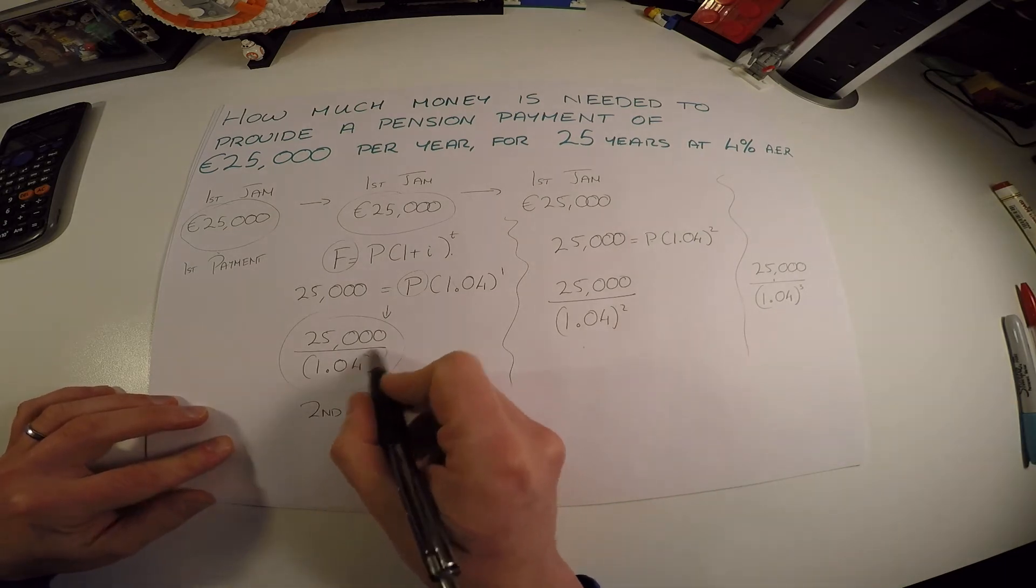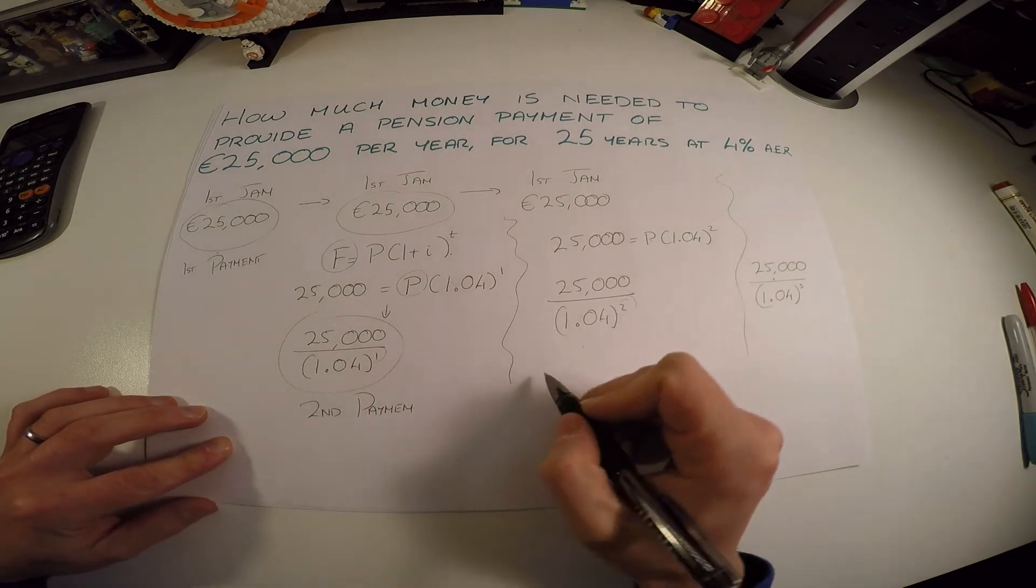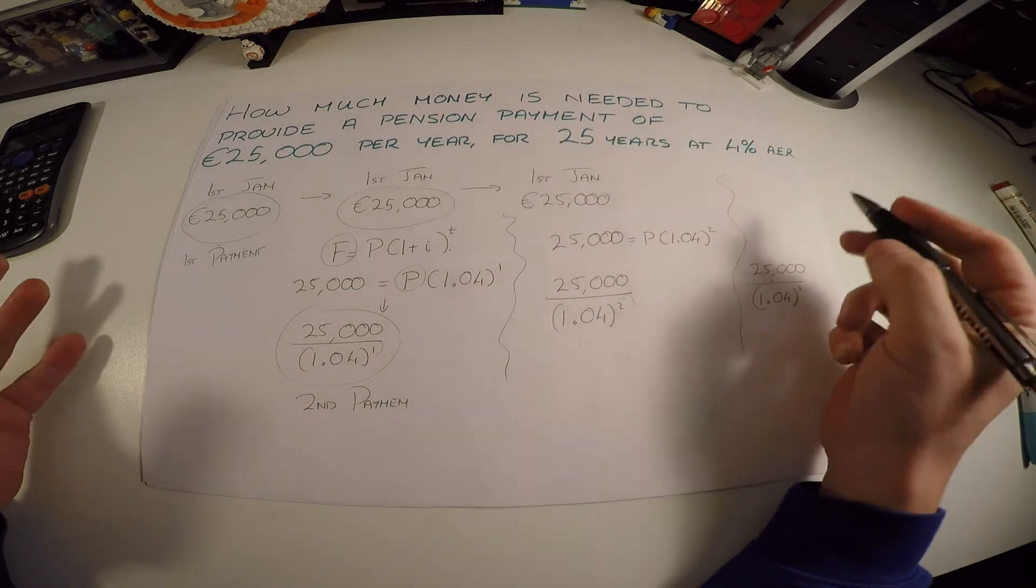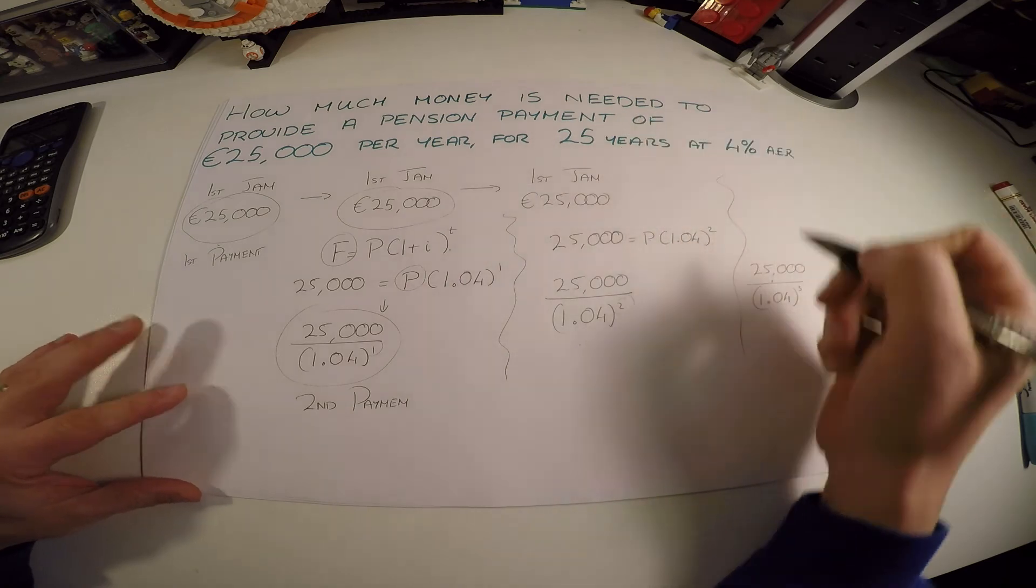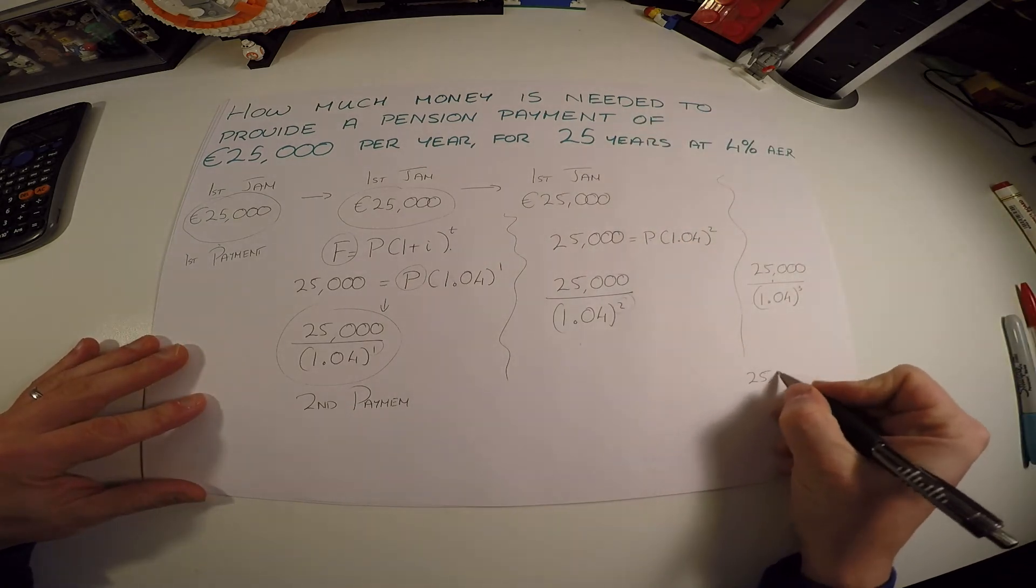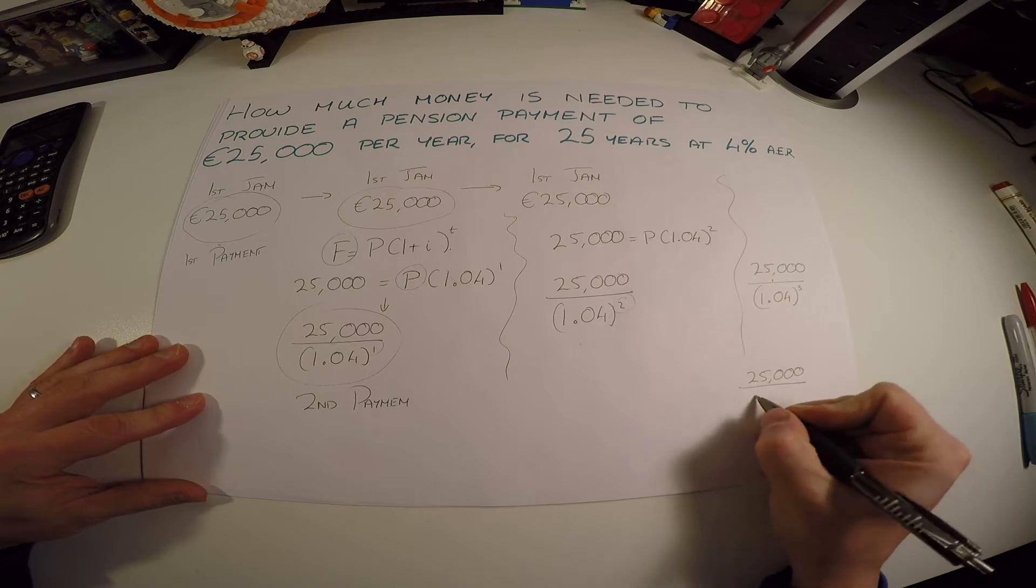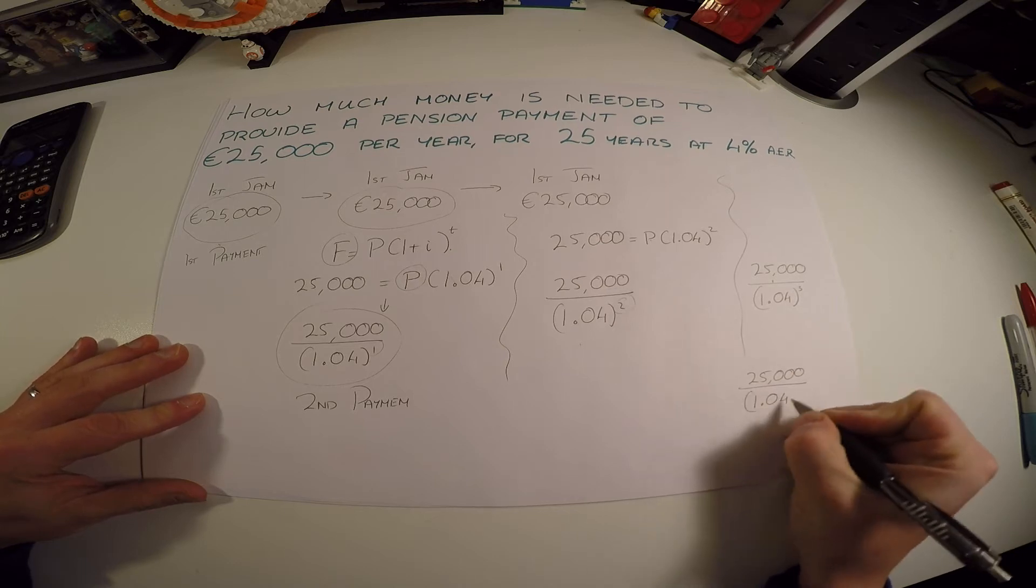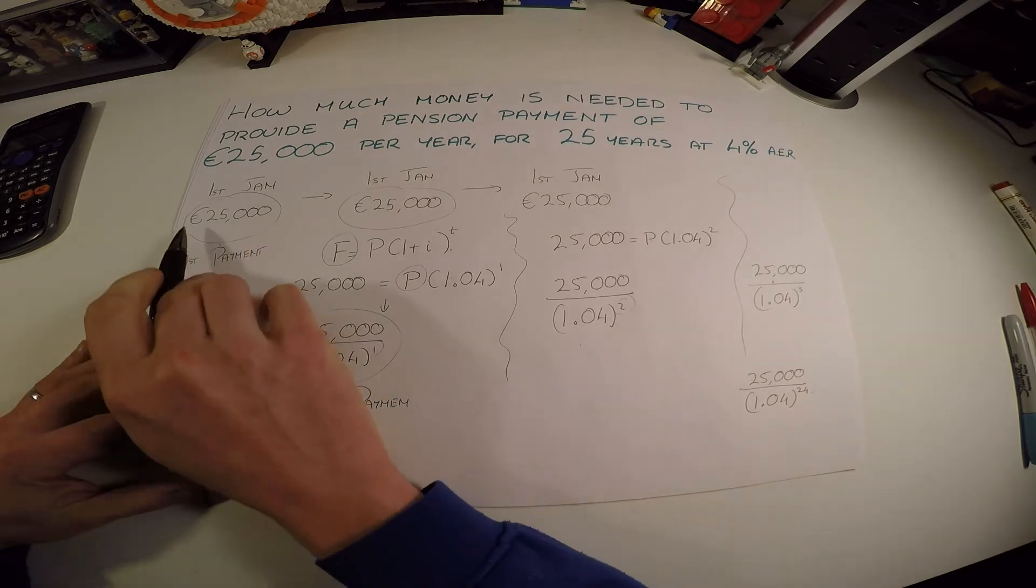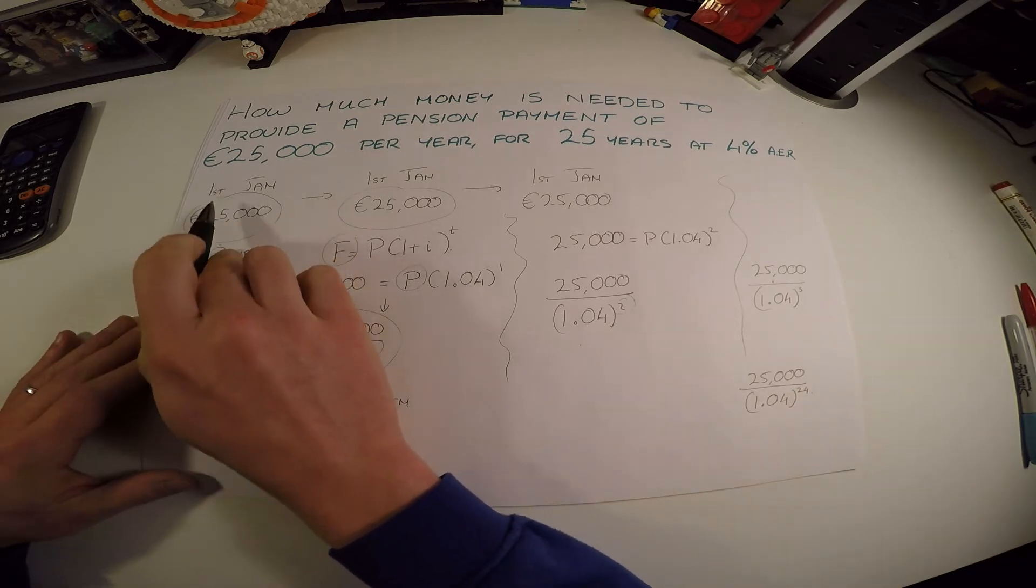Notice I said the second payment has a one, the third payment has a two. How many payments are there? Well, as yearly payments for 25 years, there's going to be 25 payments. But the final payment is going to look like this: 25,000 over 1.04 to the 24, not 25.